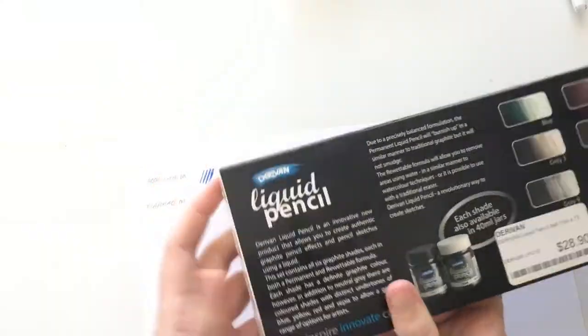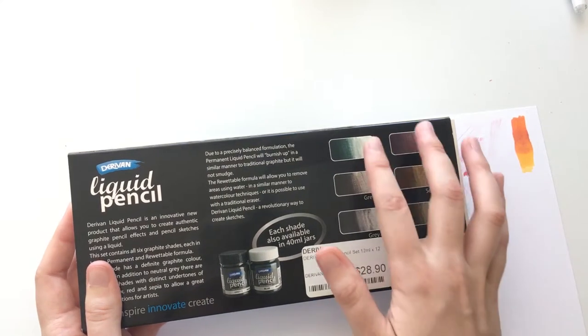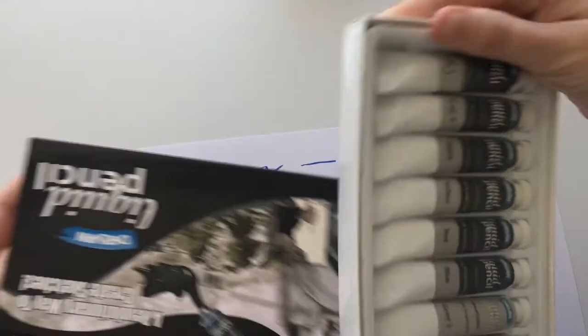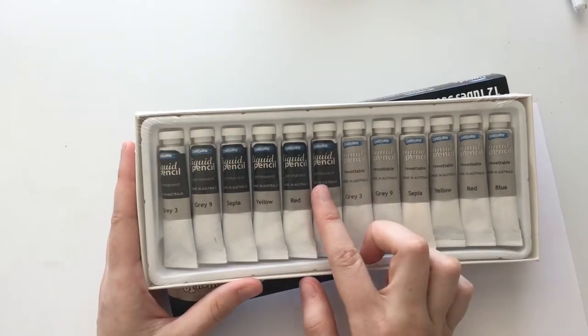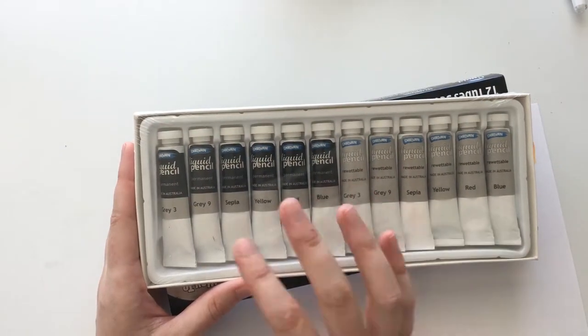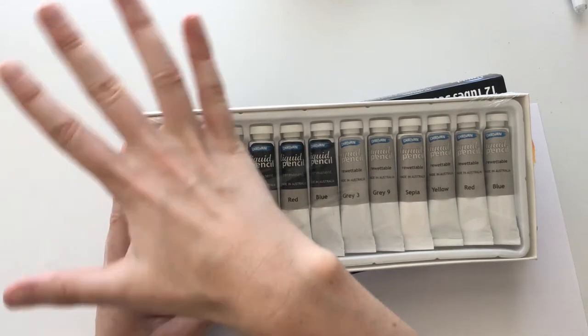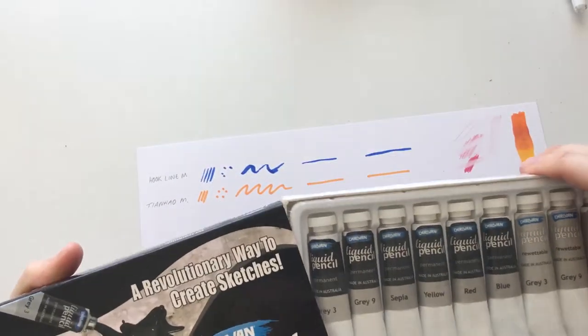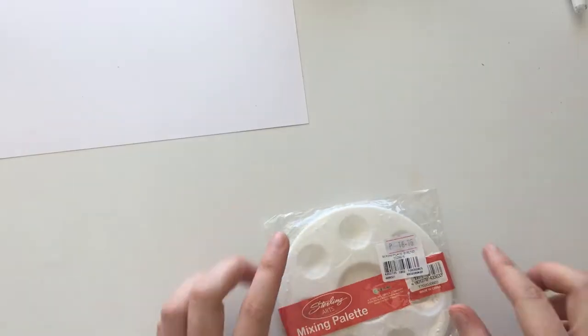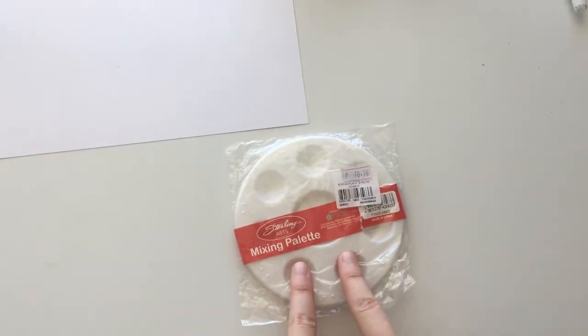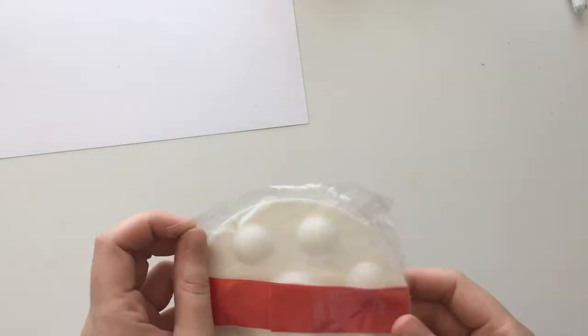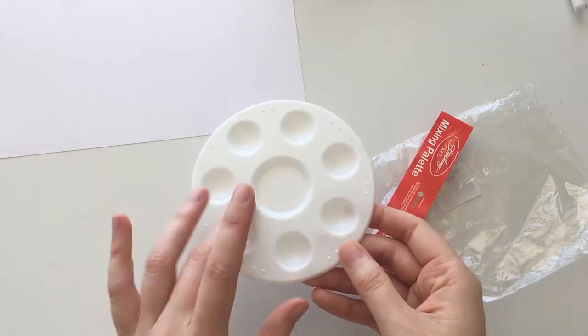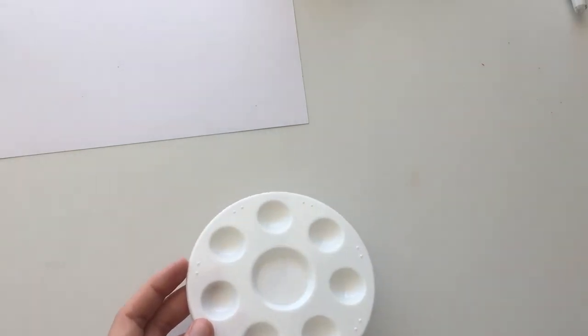Next, these are Derivan liquid pencils. I have never ever heard of a liquid pencil before. I'm really keen to try them. It comes with six colors. Well, it looks like six, but actually it's 12 tubes because they have permanent and rewettable. I'm not going to open them right now because I have so many other things to try. Have you ever tried them before? If you have, let me know. Oh, I forgot I also bought this in the Philippines. It's just a little palette, perfect size, little wells for not wasting too much paint.